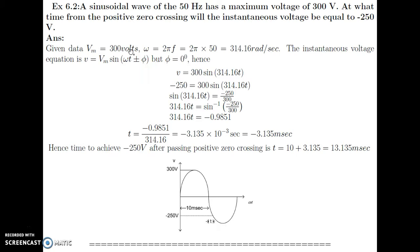Vm is equal to 300 Volts. Omega equals 2π into 50, that is 314.16 radian per second. The instantaneous voltage is given by V equals Vm sin(ωt ± φ). Since φ is not mentioned here, we take φ equal to 0. So voltage V equals 300 sin(314.16 × t).